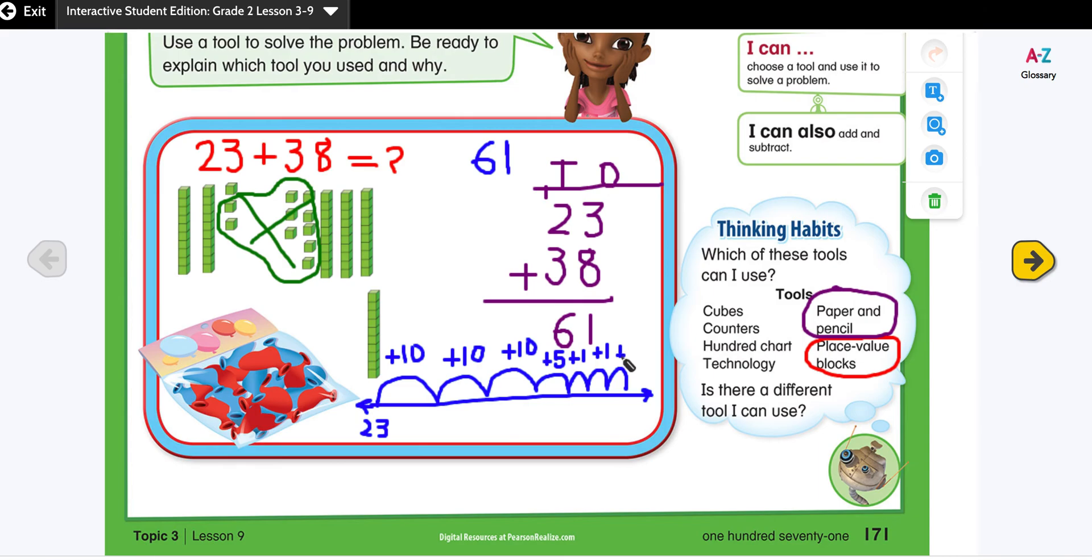Now I'm going to label my open number line. 23 plus 10 gives me 33. I'm only changing the tens place value, the ones place value remains the same. 33 plus 10 is 43. 43 plus 10 is 53.